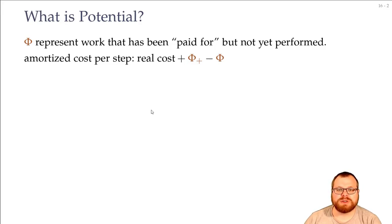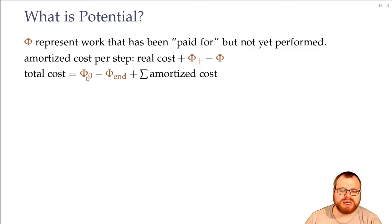And in the end, if we want to figure out how much time did we spend in total, we have to sum up the real costs, but we can also just sum up all those amortized costs, and look at the potential change from the beginning to the end. So we have the sum of the amortized costs, plus whatever potential we had in the beginning, minus the potential we have in the end.